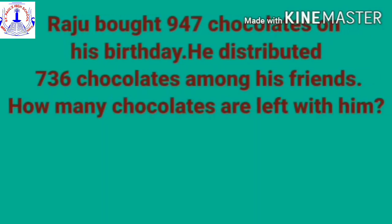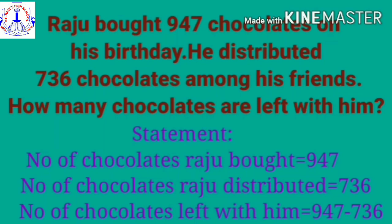Raju bought 947 chocolates on his birthday. He distributed 736 chocolates among his friends. How many chocolates are left with him? You have to find out how many chocolates are left with Raju. First, write the statements from the question itself. First statement: number of chocolates Raju bought — that is 947.